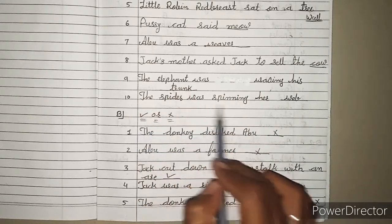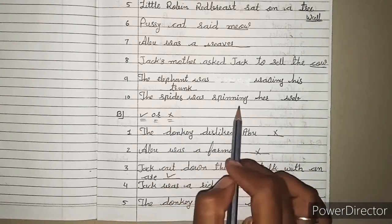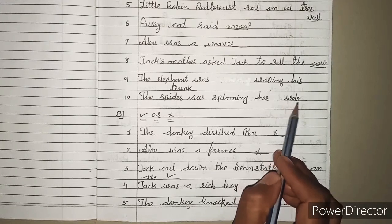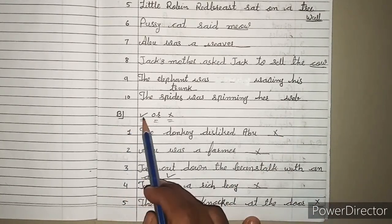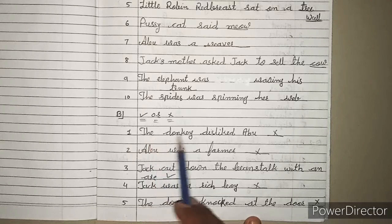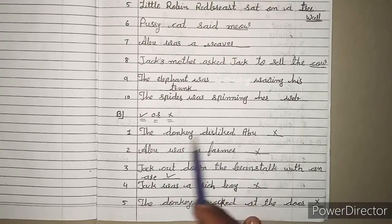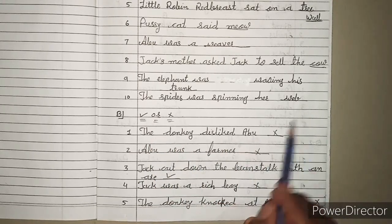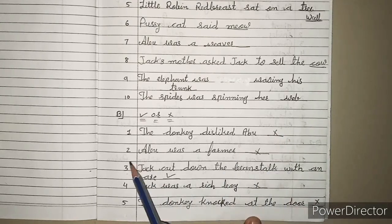10. The spider was spinning her blank. Spider क्या spinning कर रहा था? उसकी web, W-E-B. Now B, right or wrong. 1. The donkey disliked Abu. Donkey को Abu पसंद नहीं था? नहीं, तो इसमें क्या आएगा? Wrong.